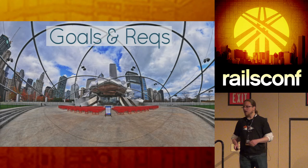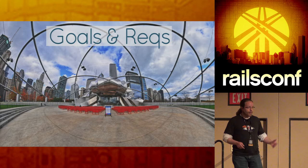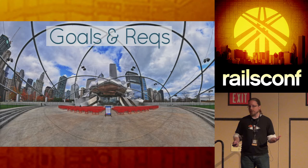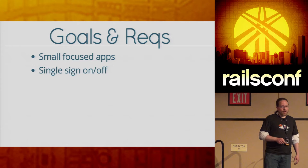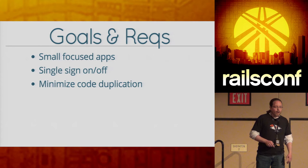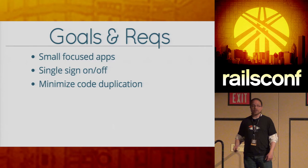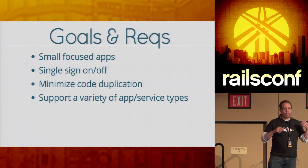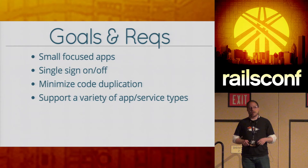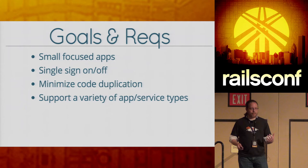Goals and requirements: it's always important to understand these so that you know if you're getting there. My goal was to have small, focused apps that were easy to test, easy to run, and quick to deploy. I wanted single sign-on and single sign-off across several services, and to minimize code duplication — I did not want to build login screens for each app. I also wanted to support a variety of service types: vanilla Rails apps, Ember apps talking to Rails JSON APIs, and hybrid apps.